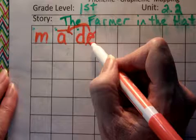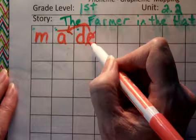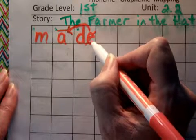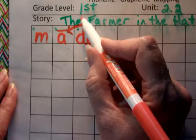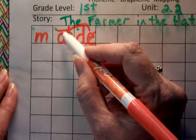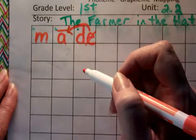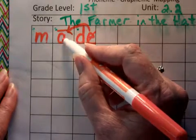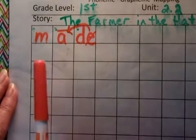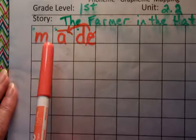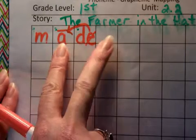So you can do bossy E, Mean King Ed, any of those that helps you remember that the silent E influences or controls the vowel in front of it to make it long. So it says its name, A. So now the word is not mad, it's made.